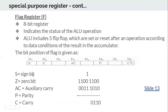The five flag bits are: sign bit (D7), zero bit (D6), auxiliary carry (D4), parity bit (D2), and carry bit (D0). So D0 is carry, D2 is parity, D4 is auxiliary carry, D6 is zero bit, and D7 is sign bit.